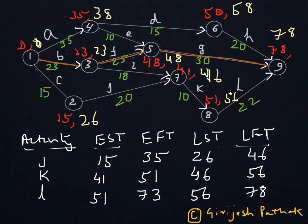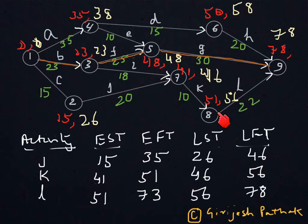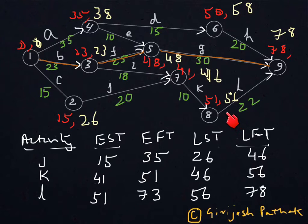Wherever you find a gap between earliest time and latest time, it indicates that on that node you can reach earliest by that time. For node 8, you can reach earliest by 51 days, but even if you reach there by 56 days your project is not getting delayed. It means that for node 8 you have 5 days extra. This is called slack.